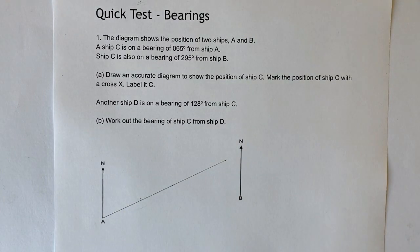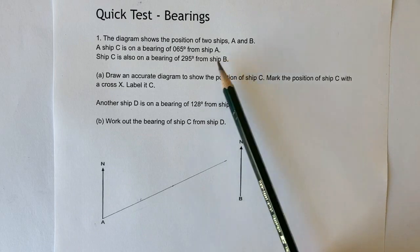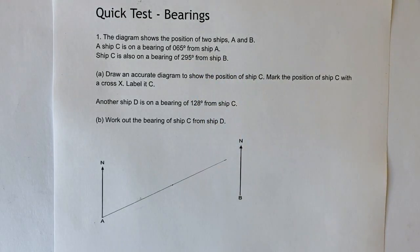So what you've got to do is you've got to imagine that you're sitting on board this ship at A and you're looking off towards your right-hand side at 65 degrees and somewhere along the horizon you're going to see ship C. And it's the same situation from ship B, but this time what we're told is it's 295 degrees.